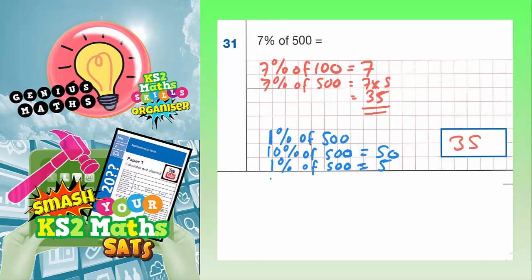So if 1% is 5, 2% would be 10, 3% would be 15, 4% would be 20, 5% would be 25, 6% would be 30, and 7% would be 35.